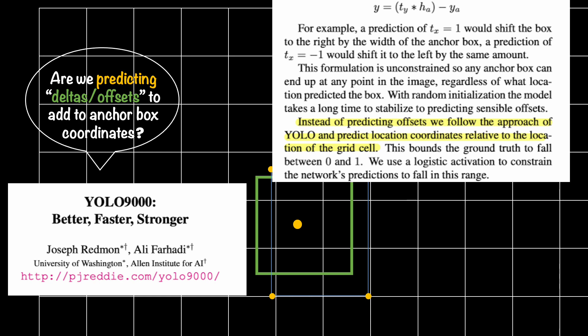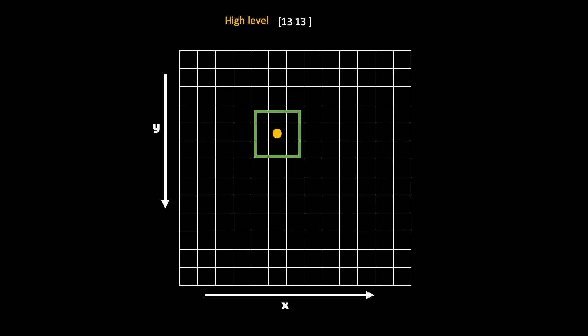The solution they suggest is that instead of predicting the offsets, which could take your anchor box anywhere and hence it is called unconstrained, at least within this feature space, why not predict the location coordinates relative to the location of the grid cell? Now this statement could be a bit cryptic. So let me explain it with the help of some visuals.